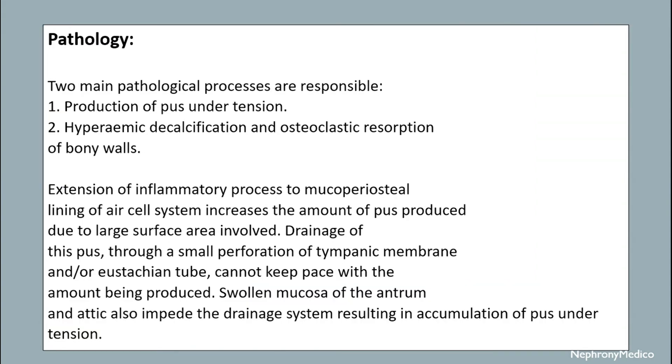Pathology: The two main pathological processes include production of pus and its retention, hyperemic decalcification, and osteoclastic resorption of the bony walls of the mastoid air cell system.